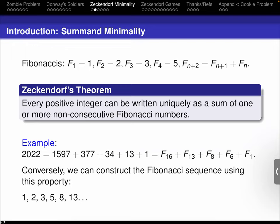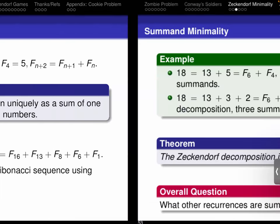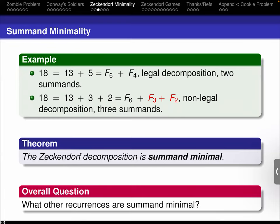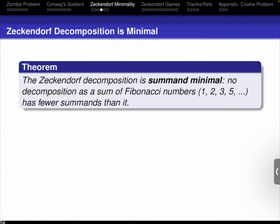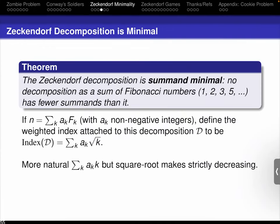This is similar to how painful it is to multiply two Roman numerals — the best way is to convert each to decimal, multiply, and convert back. Now I want to talk about some minimality. We can write 18 as 13 plus 5 (F6 plus F4) or as 13 plus 3 plus 2, which has more summands. It turns out no decomposition has fewer summands than the Zeckendorf decomposition — it is summand-minimal. Once we know this, we can ask: what other recurrences are summand-minimal? The proof introduces a good monovariant.